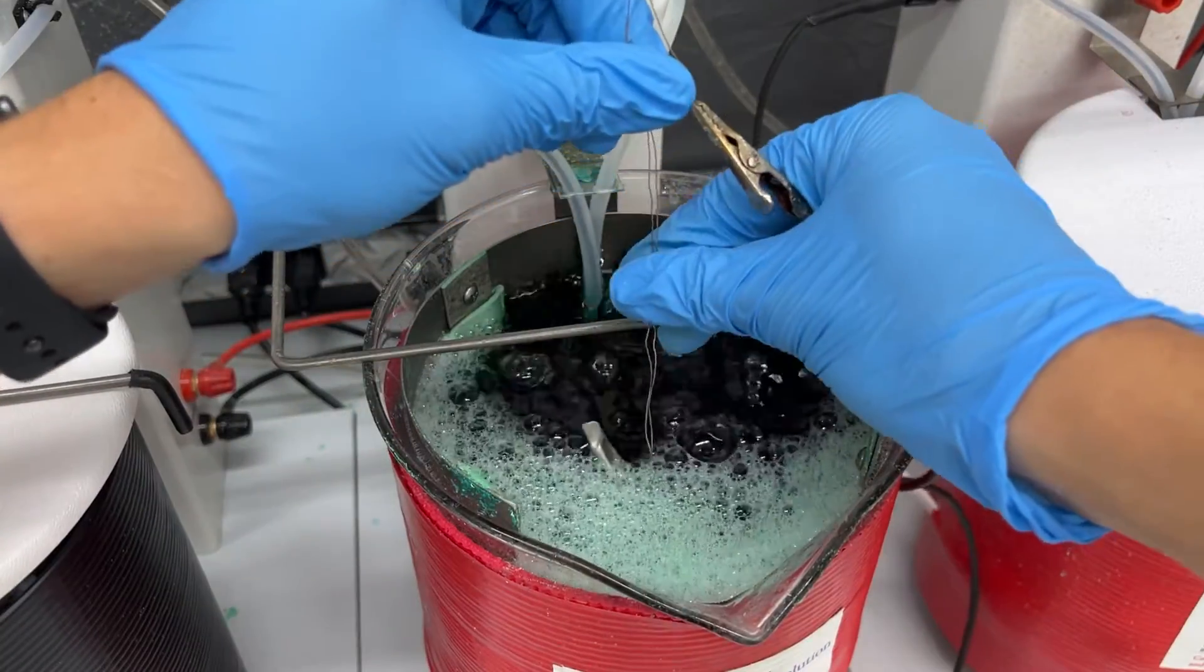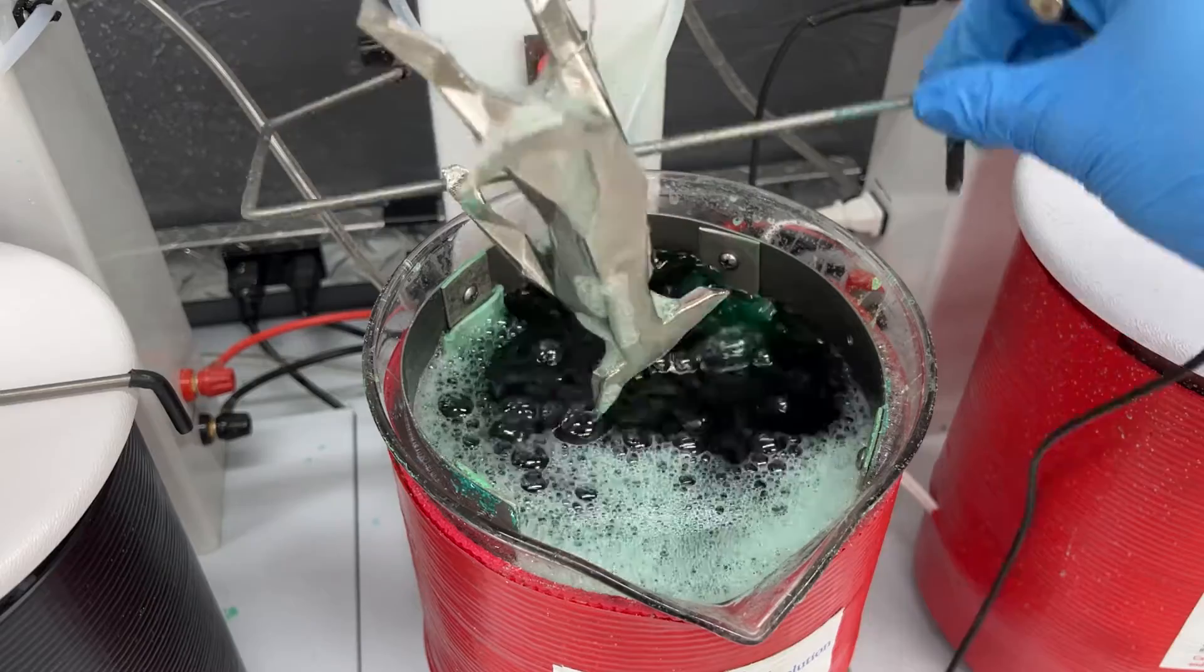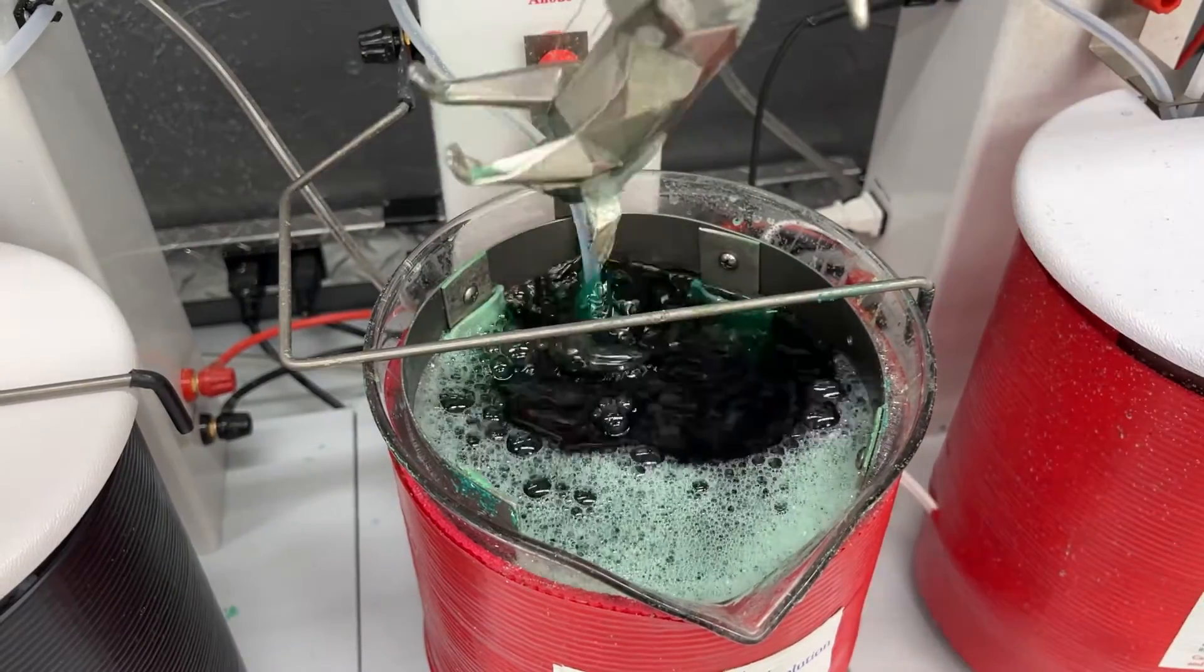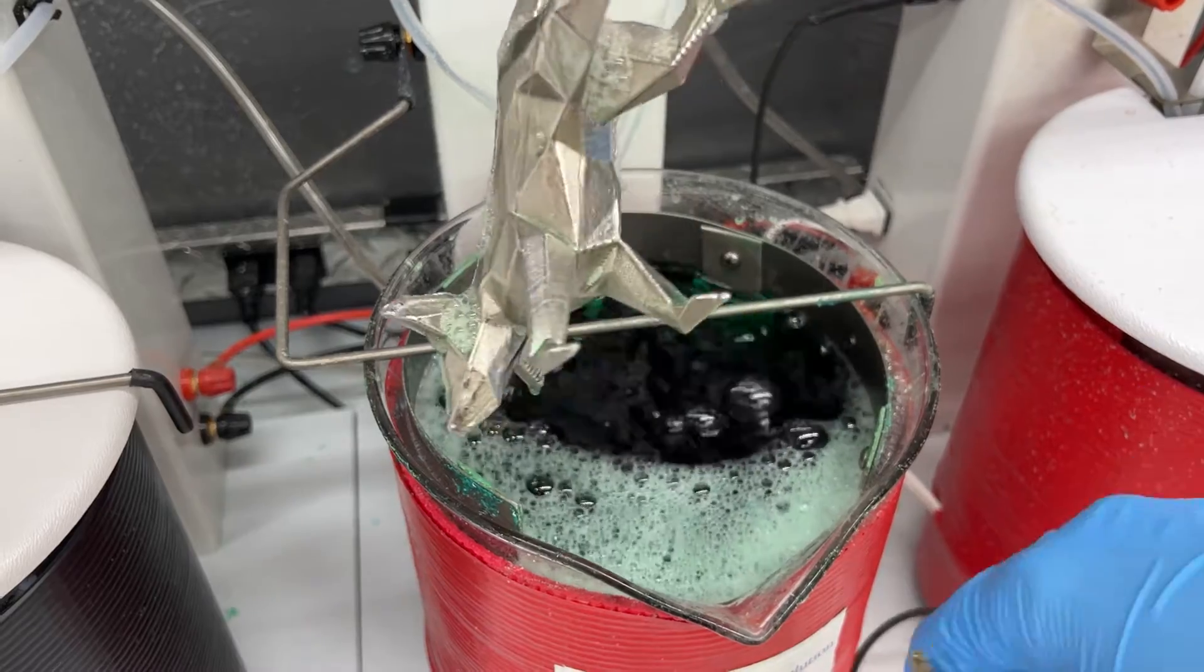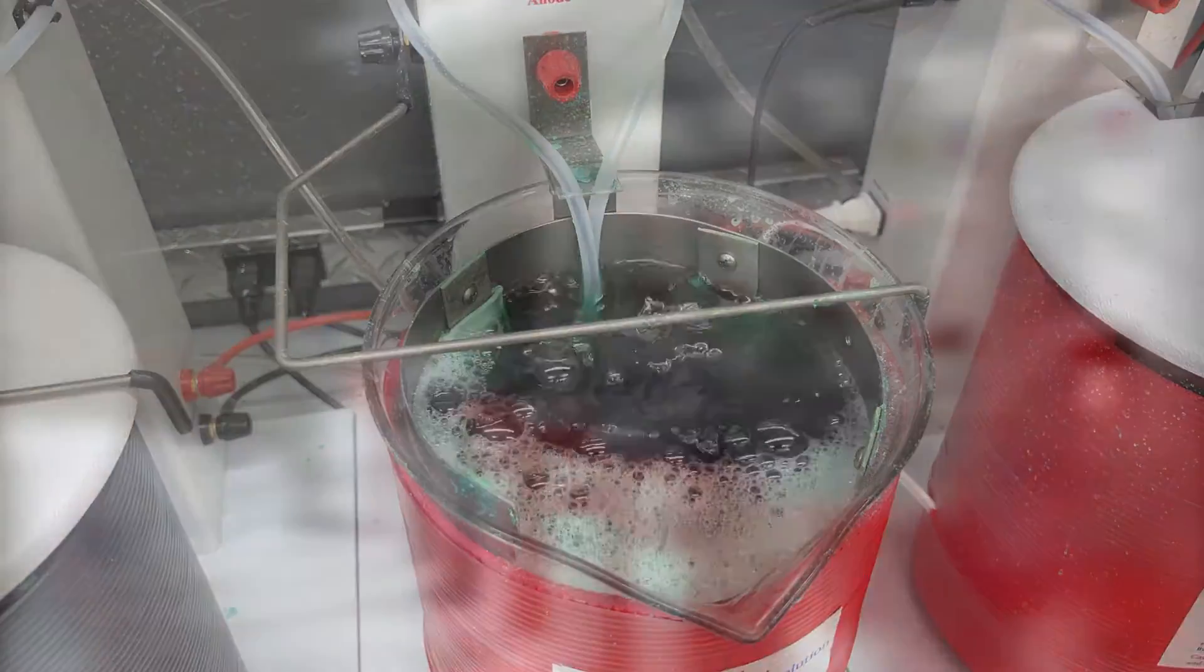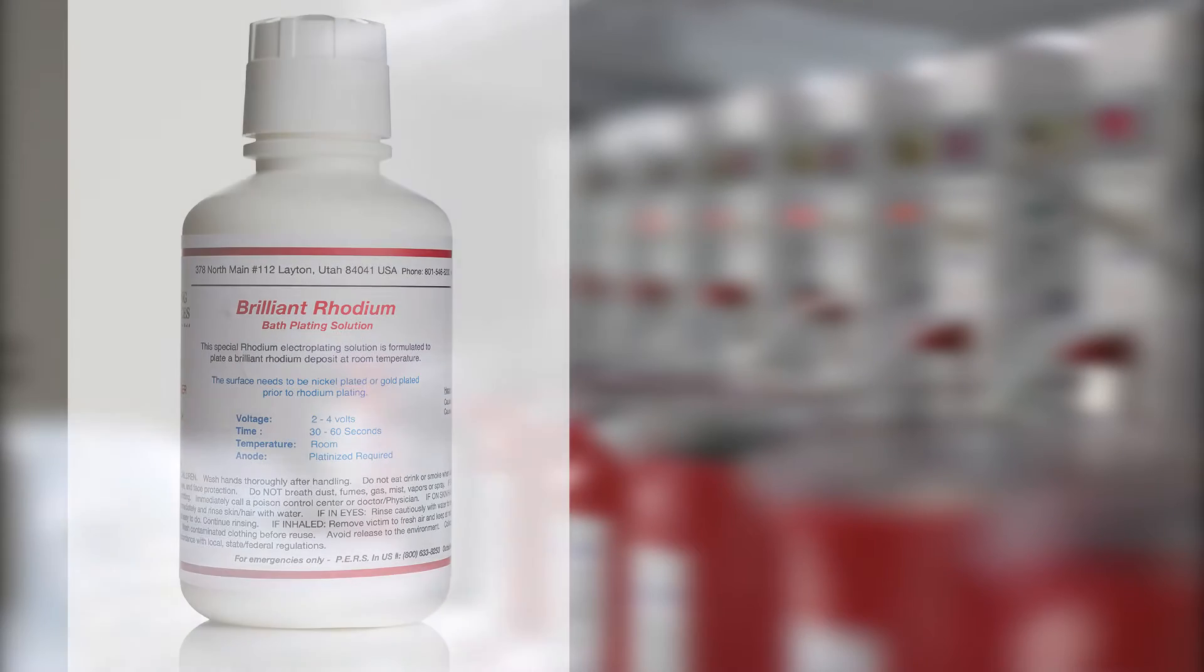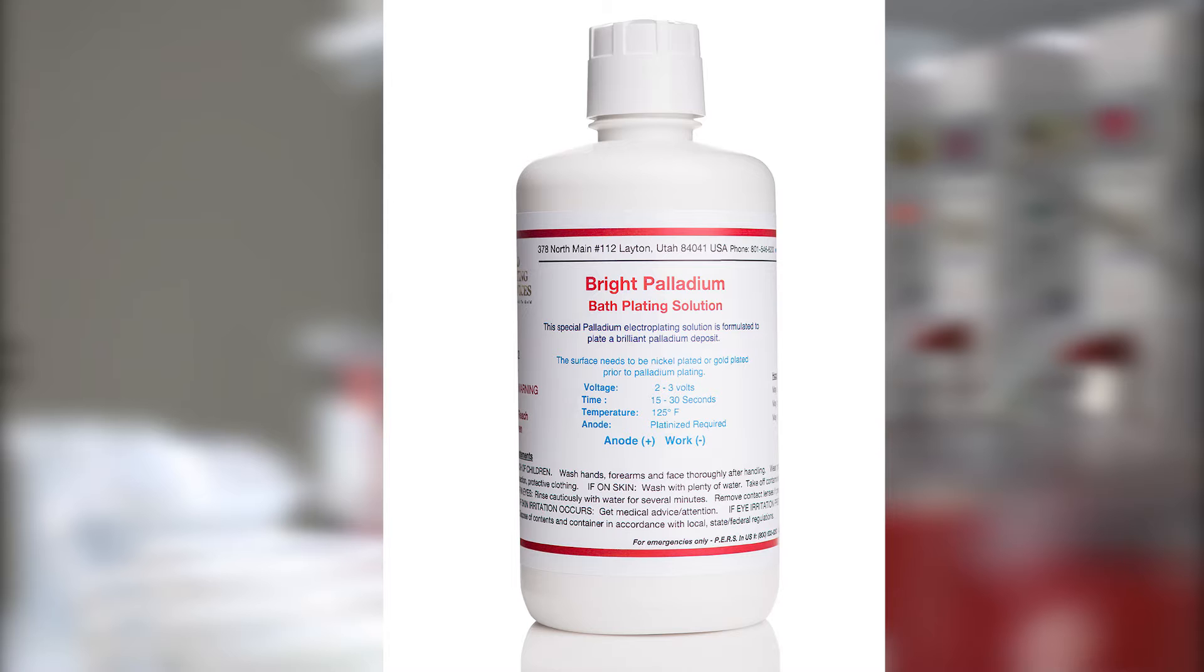It is also important to consider the type of diffusion barrier used. For example, nickel is a common diffusion barrier. However, nickel is often not used for jewelry items since it can cause an allergic reaction in many people. In this case, we would recommend rhodium or palladium. Palladium is an excellent diffusion barrier because it will not corrode, although it is more expensive.